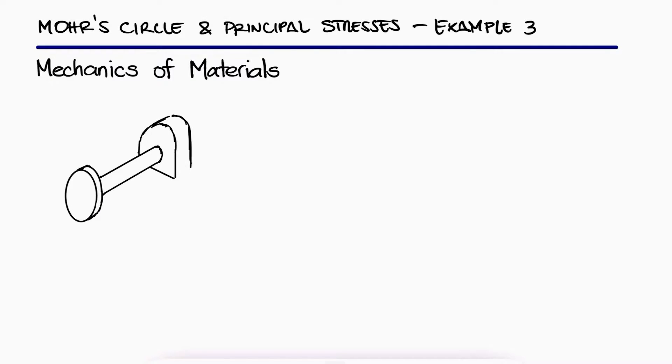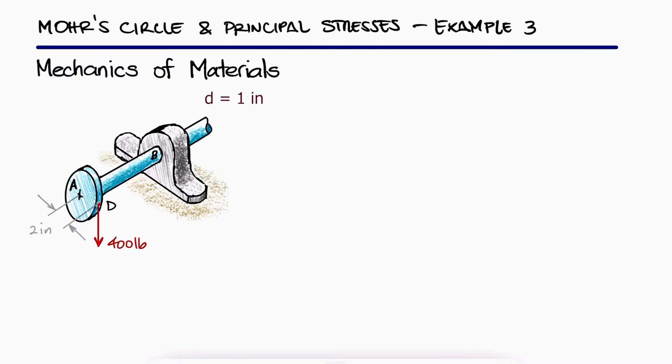A 400 pound vertical force is applied at D to a gear attached to the solid 1 inch diameter shaft AB. What are the principal stresses and the maximum shearing stress at point H located as shown on the top of the shaft?